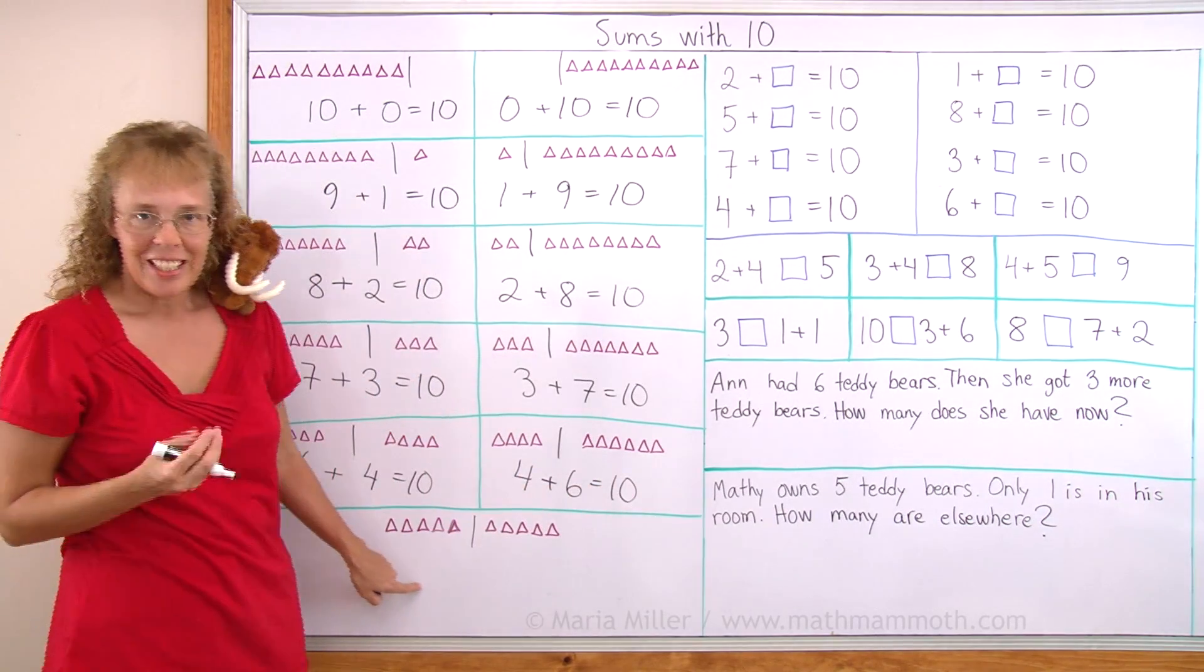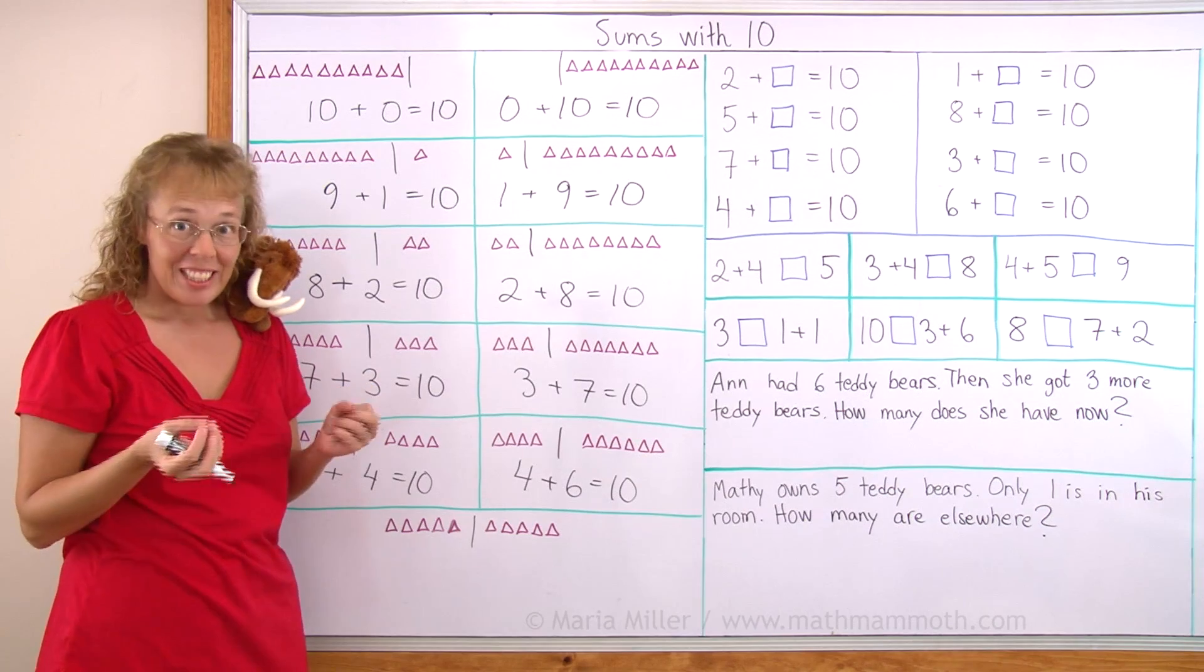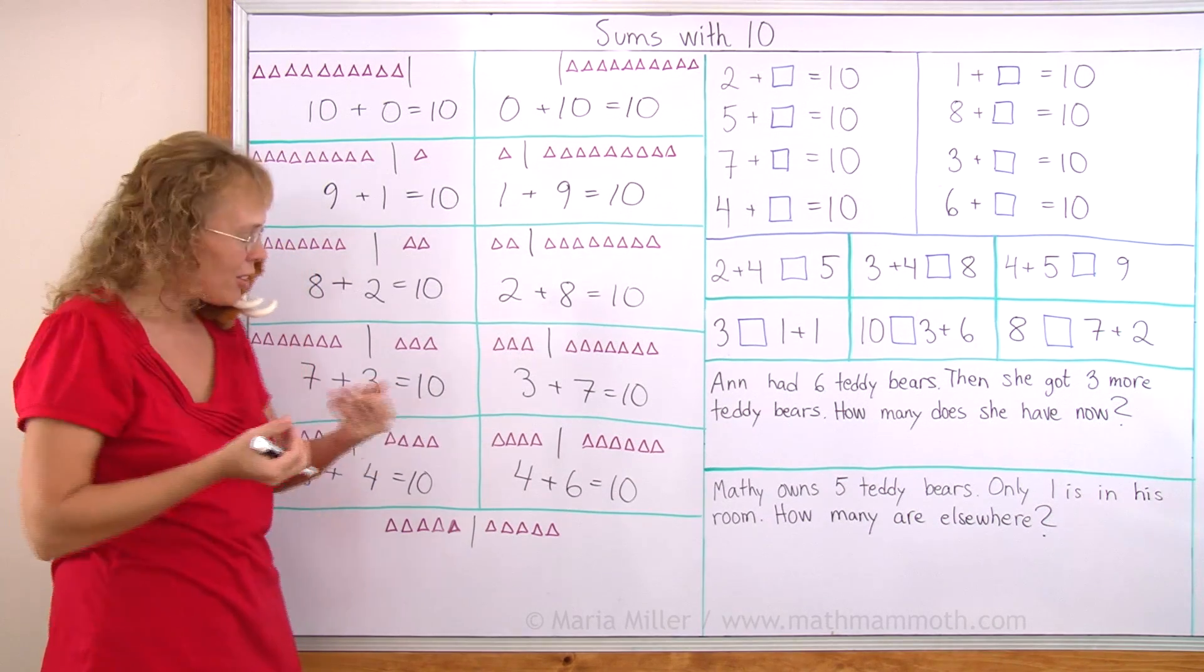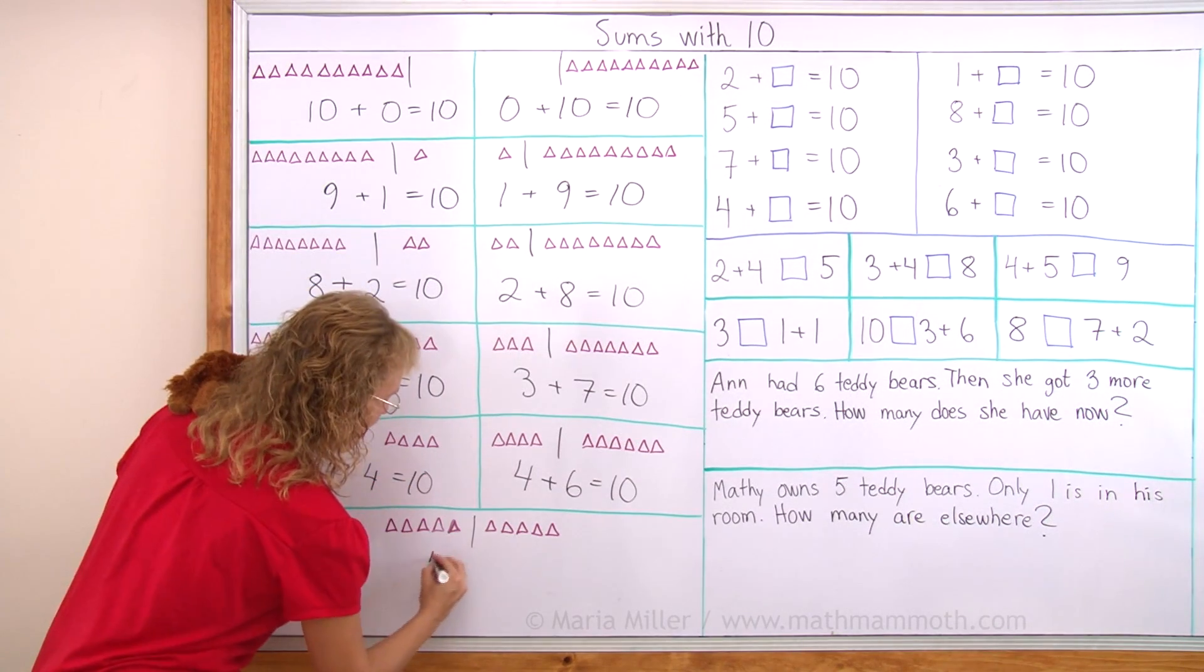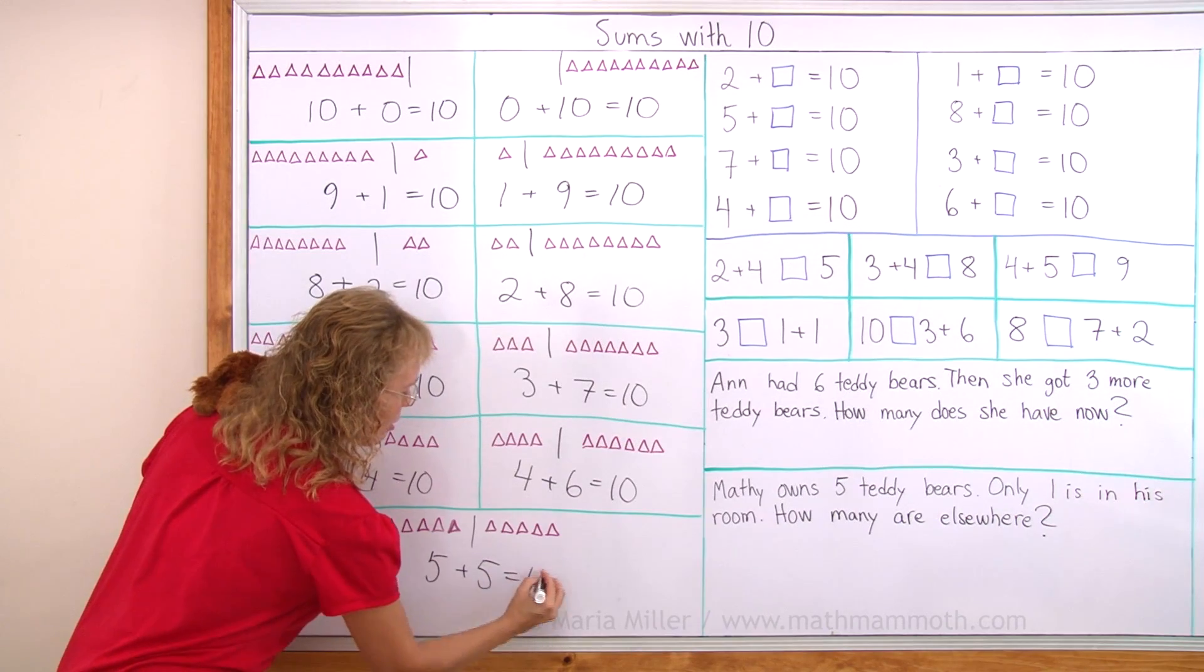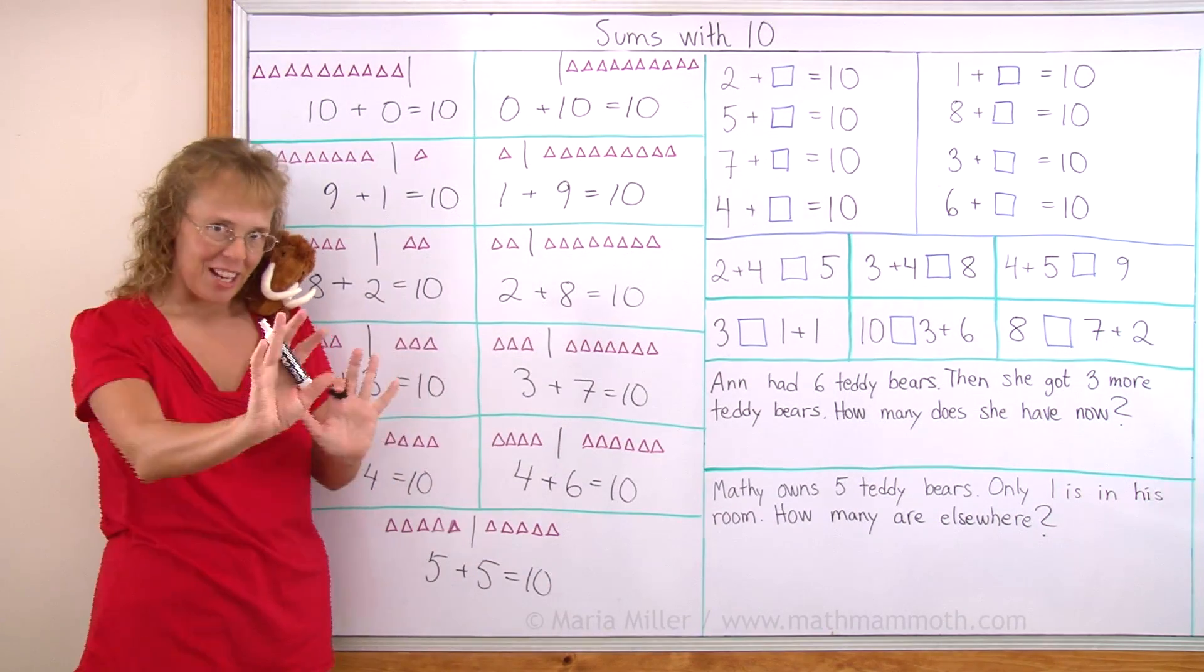And the last one is if you were sharing 10 triangles evenly with your brother or sister. 5 and 5. You remember that from your fingers. 5 and 5 makes 10.